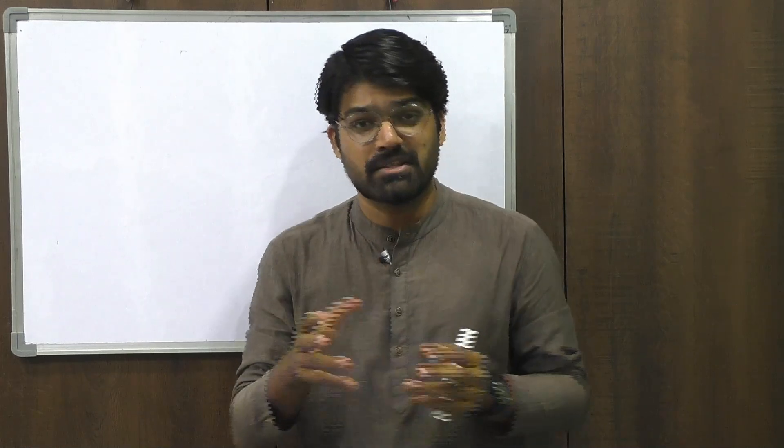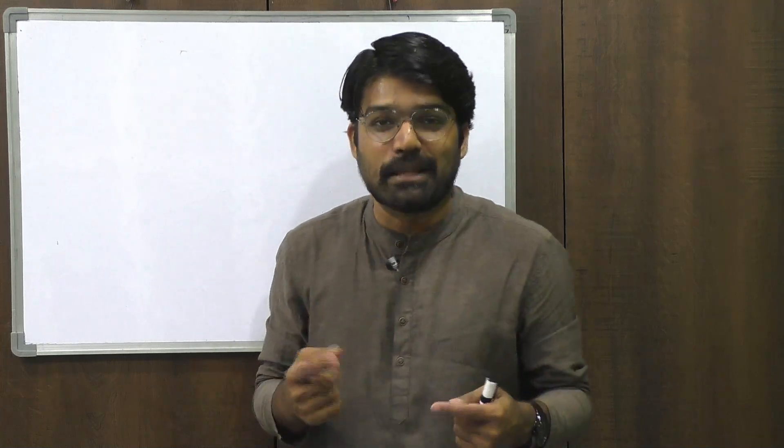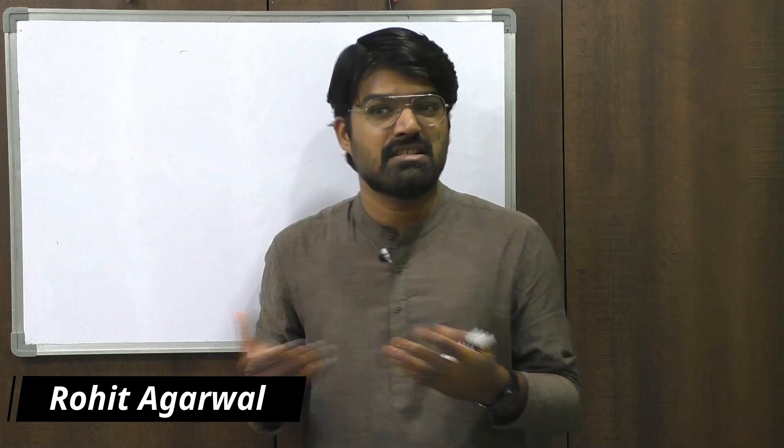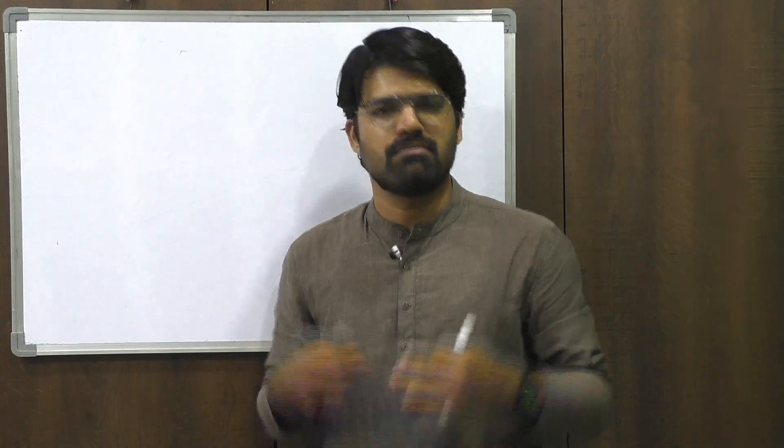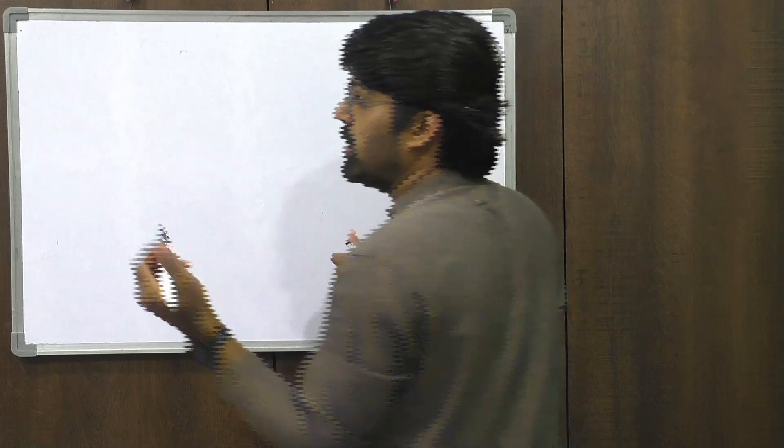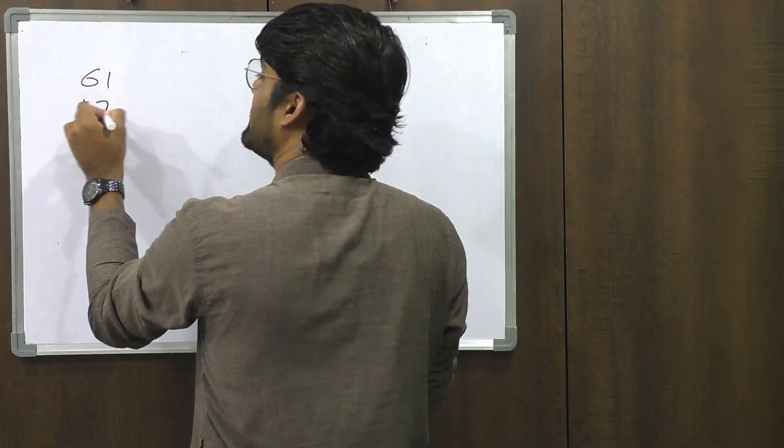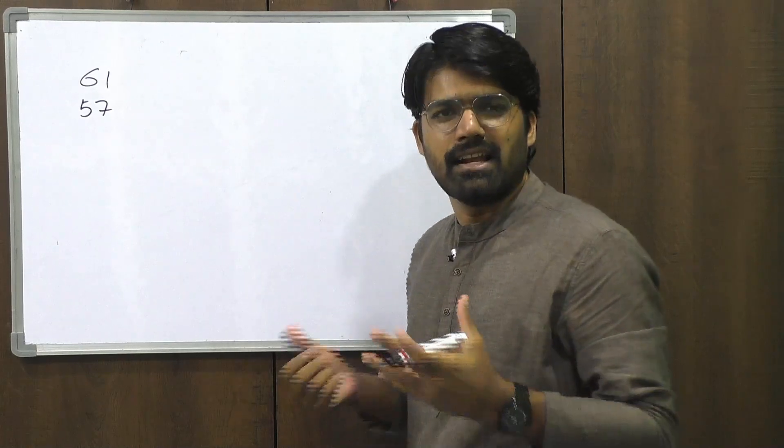I'm sure all of you have learned the Nikhilam Sutra part 1 and part 2. So now tell me what is 61 times 57? Well, difficult right, because in part 1 we learned how to multiply numbers closer to 10, but 61 and 57 are nowhere close to 10. And part 2 talks about multiplication of numbers closer to 100 or 1000, but 61 and 57 are not so close to 100. So application of Nikhilam Sutra may not work here. So does it really fail? Well no, not really. Let me explain you the workaround.